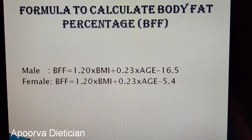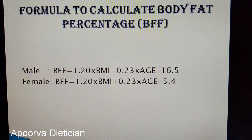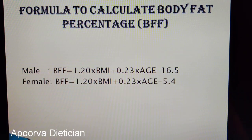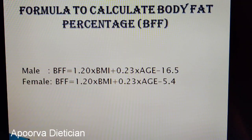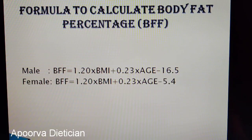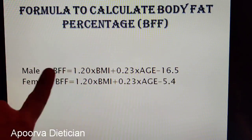Now we come to the main topic — the formula to calculate body fat percentage. To calculate it, you first need your Body Mass Index (BMI). BMI is your weight divided by height in meters squared. For example, if your weight is 60 kg and your height is 161 cm, you convert 161 cm to 1.61 m, and calculate: 60 ÷ (1.61 × 1.61) = your BMI.